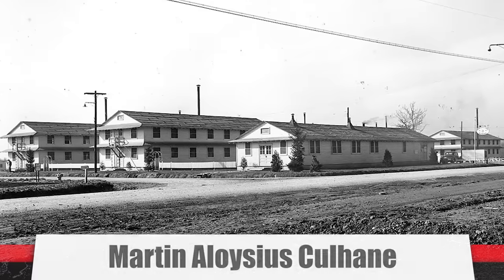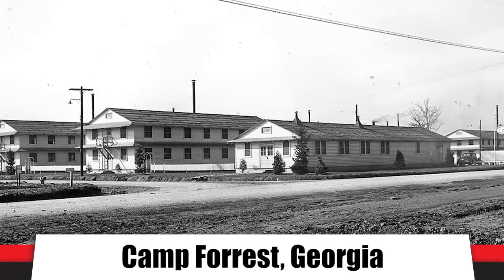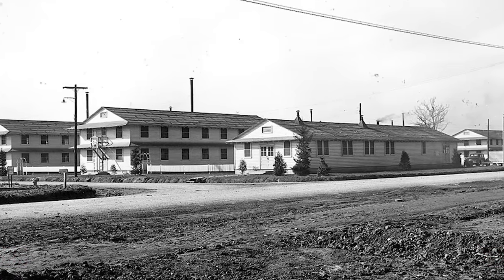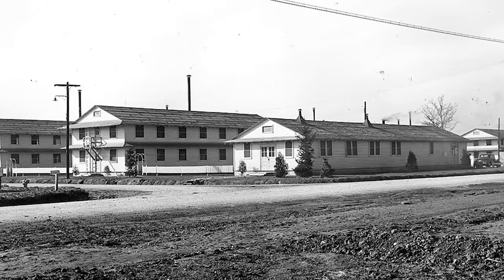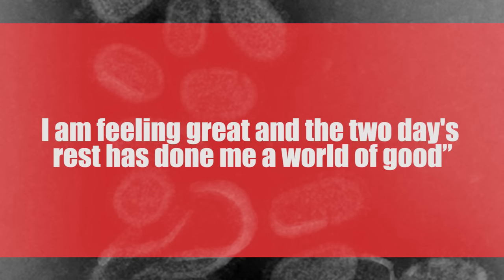A series of letters from American private Martin Aloysius Culhane — known as Al — stationed at Camp Forest, Georgia, provides a good example of acquired immunity. While mourning the death of his bunkmate Thomas, Al was in relatively high spirits, having survived the great pandemic not once but twice. He wrote: 'I am still in quarantine, but I will be released today. I am feeling great, and the two days' rest has done me a world of good.' His main concern was that he had been neglecting several ladies while in quarantine.